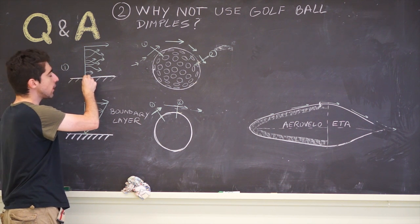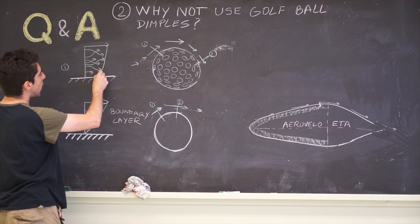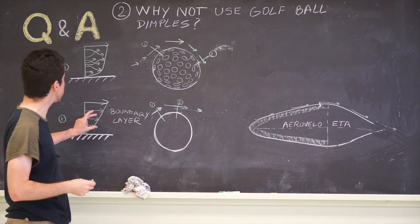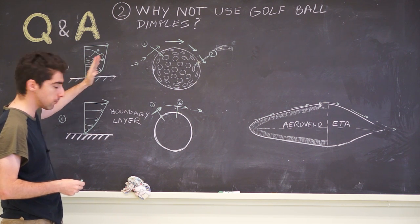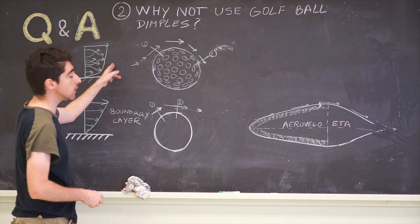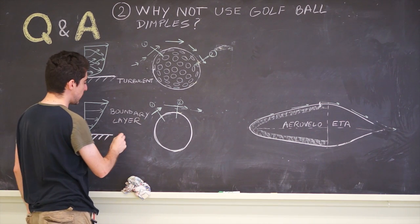Right next to the object, the velocity is still zero. But the whole profile is a lot faster, especially when we get close to the object. This air has more velocity. We call this the turbulent boundary layer, and we call this the laminar boundary layer.